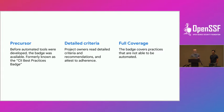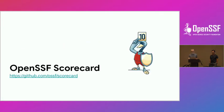Another important thing about the badge is it has full coverage because it's not limited by what can be automated. As you'll see with the automation techniques later, there are limitations to what you can build inside a tool. Getting on to the first tool, we're going to talk about Scorecard, and Naveen is the maintainer of Scorecard and will go over that.